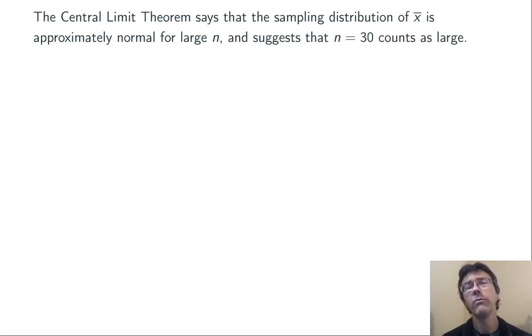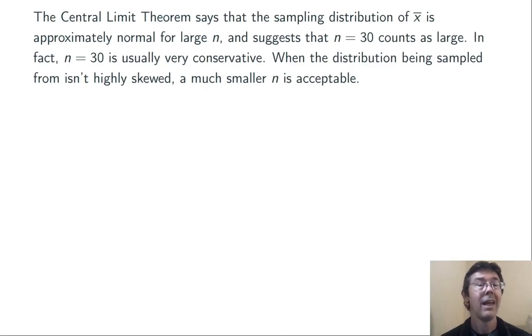One final comment about sample size. The central limit theorem says that the sampling distribution of x-bar is approximately normal for large n, and suggests that n equals 30 counts as large. Large isn't a very mathematical term. It's kind of vague, so let's take a second to unpack it. n equals 30 is a very conservative count in general, and it's only necessary to have a sample that large if the distribution that you're sampling from is pretty skewed. When you're sampling from a fairly symmetric distribution that does not have extreme outliers, a smaller n is going to be acceptable.